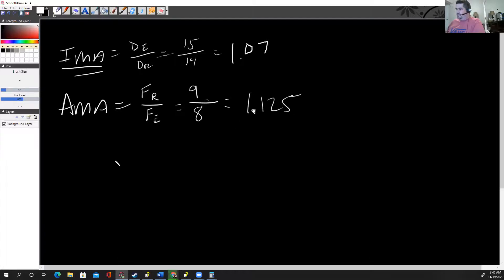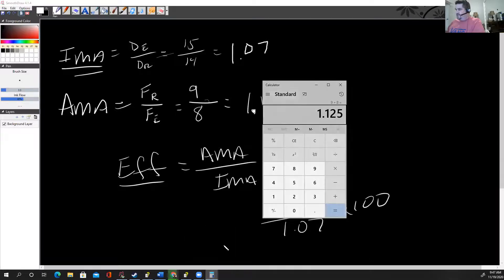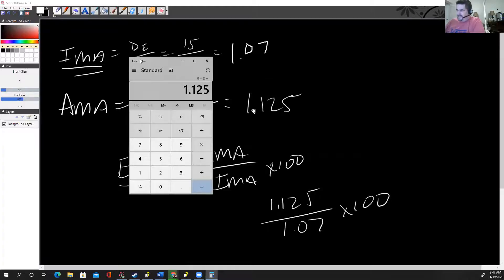When you have to figure efficiency, and that's what we're doing today, we just take AMA and divide it by IMA and times it by 100 because it's a percent. In other words, you would take AMA, 1.125, divided by 1.07, and times it by 100. So 1.125 on the top divided by 1.07 on the bottom, then times that by 100, and our efficiency is 105%.